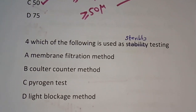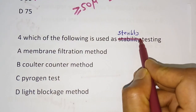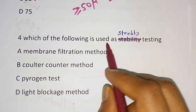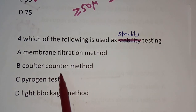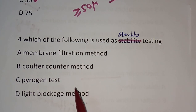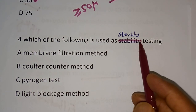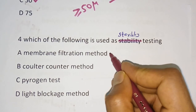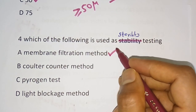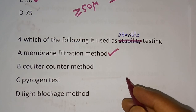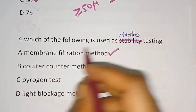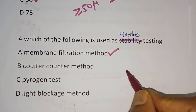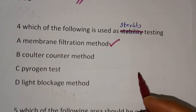Question 4: Which of the following is used as a sterility test? Options: membrane filtration method, counter method, pyrogen test, light blockage method. The correct answer is membrane filtration method. For sterility testing of parenteral preparations, two methods are used: membrane filtration method and direct inoculation method.